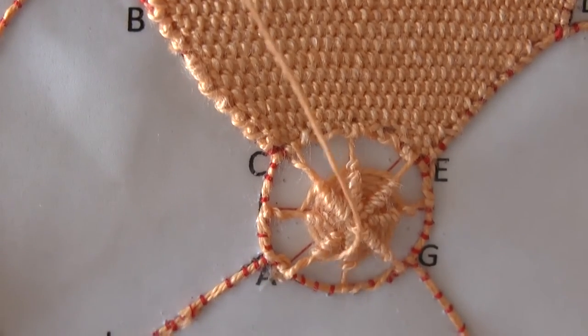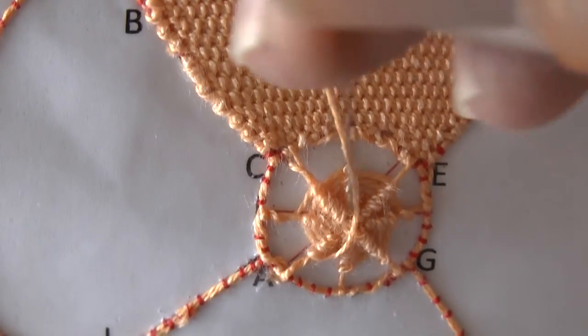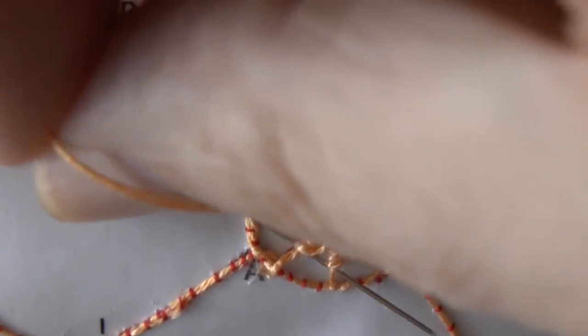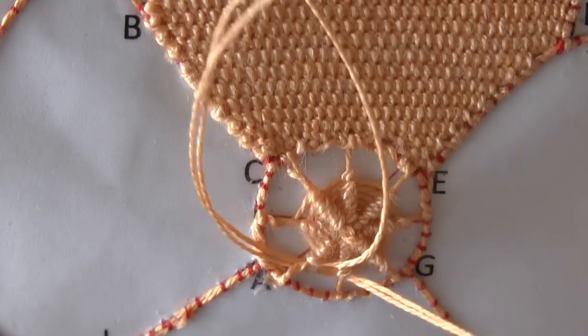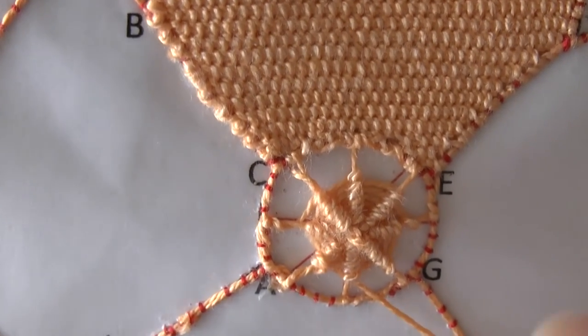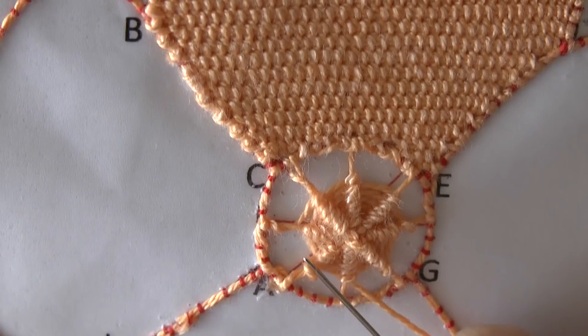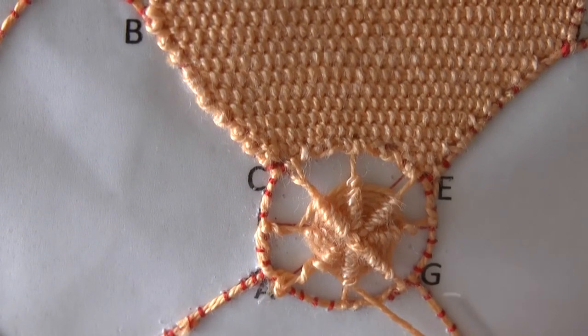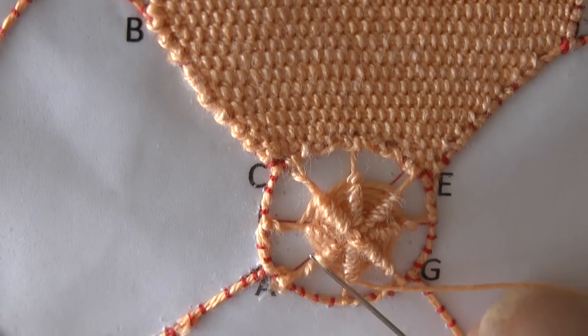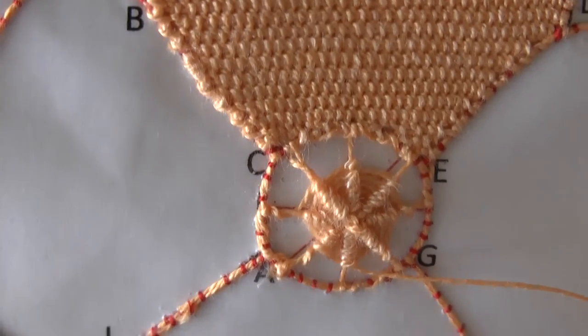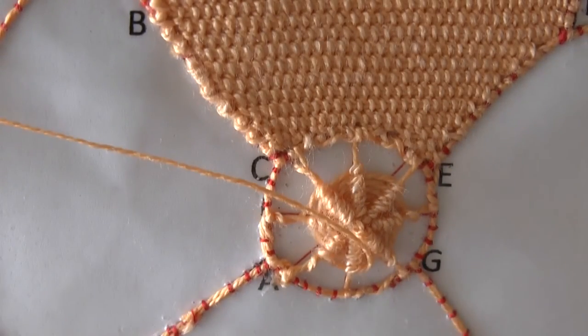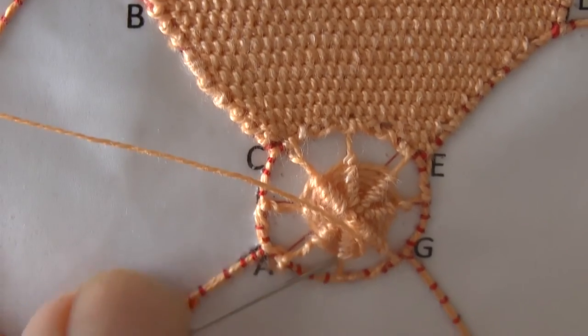Then fold it back and then start again. So we're going to come under here and under two. Make sure that stitch sits on the edge of those other loops. Back one, under two.